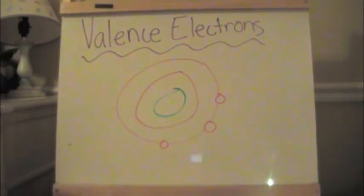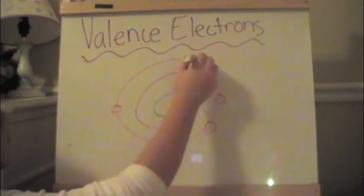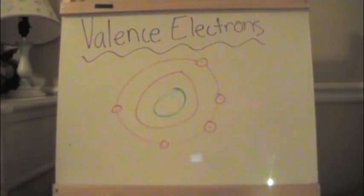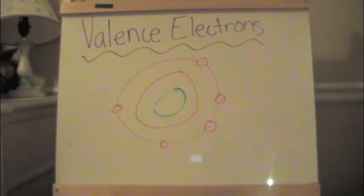So, if we look at this, we would say there are three valence electrons. Here, there are five valence electrons. So, however many electrons are on the outermost shell are the valence electrons.